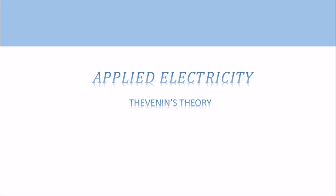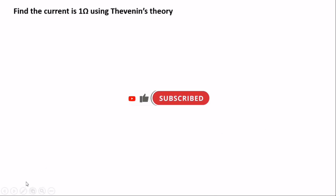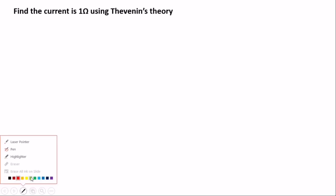Please make sure you watch this video to the end and also check the subscription button and subscribe for more videos. So we're going to find the current in the one-ohm resistor using Thevenin's theory. We have a diagram which is designed for us.